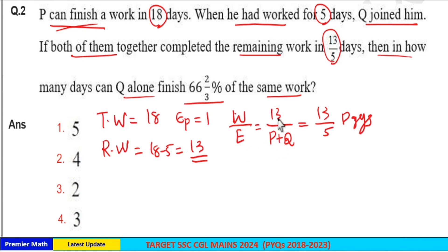So here this is work by efficiency ratio, and here P plus Q is the efficiency of P and Q, and efficiency of P is 1, means efficiency of Q must be 4 here.